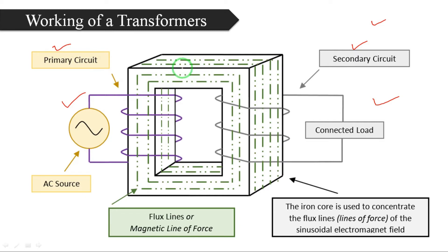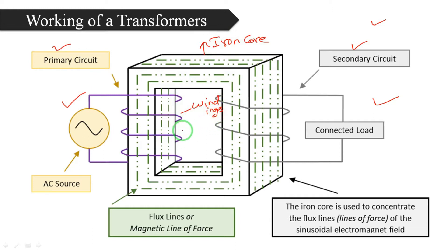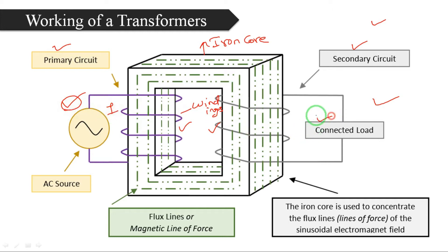The transformer consists of two main parts: the iron core and the windings. There are two windings — this is the first winding and this is the second winding. Which winding is called the primary winding? The one which is connected to the source is called the primary winding. The one connected to the load is called the secondary winding.